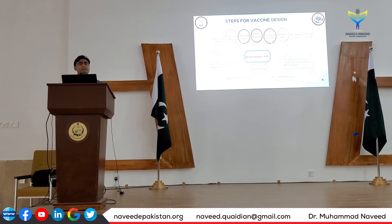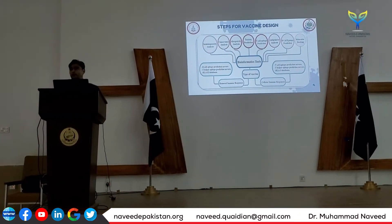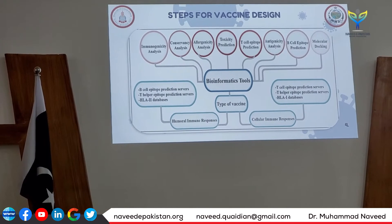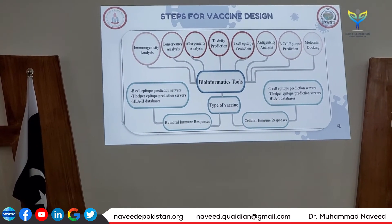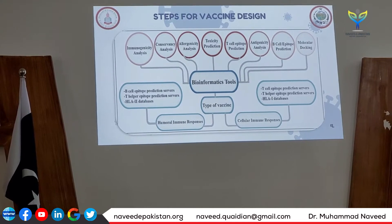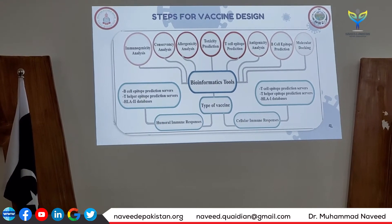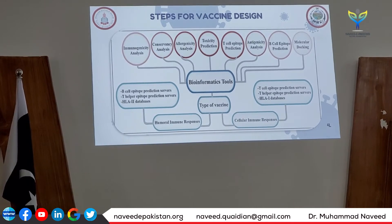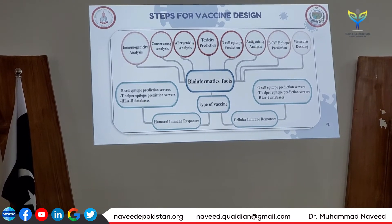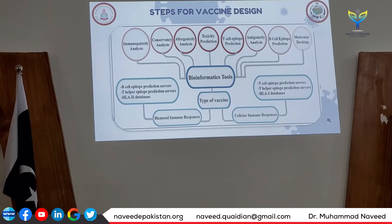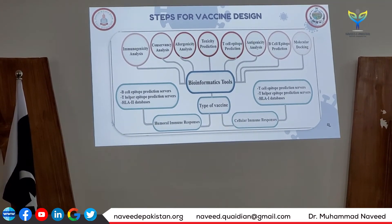Here is a complete methodology. If you want to design any kind of vaccine, you have to follow these steps: physicochemical tools, diagram of vaccine design, humoral immune responses, cellular responses, and immune simulation. We have T cells, B cells, MHC class 1, MHC class 2. These are the list of tools which we can use for the design of a good vaccine.